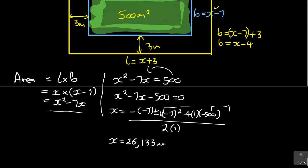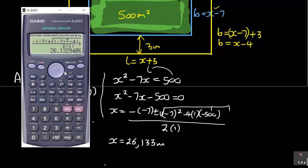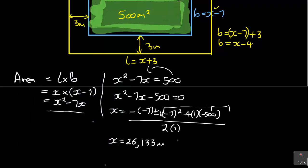So X will equal — starting with the positive — square root of negative seven squared minus four times one times negative 500, over two times one. This gives me my first value as 26.133, to three decimal places. So that is 26.133. So that is my value of X, which is the length in meters.